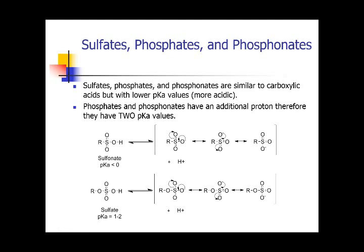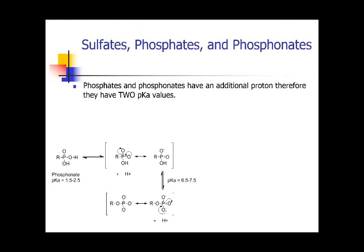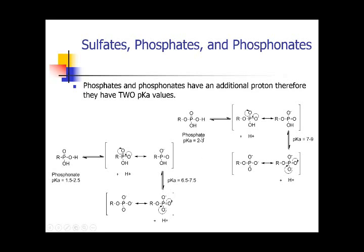Phosphates and phosphonates are very similar, except now you have a phosphorus versus a sulfur, but there's an additional proton to be lost — hence you end up with two pKa values. Phosphonates have two OHs; the first proton that can be lost has a pKa of approximately 2. Once it is off, the second deprotonation event requires an elevated, more basic pH. This is because molecules tend not to like to have too much negative charge close together — electronic repulsion. Phosphate has that extra oxygen, which gives it the name versus phosphonate, and has a slightly elevated pKa. The second proton is still more difficult to take off.